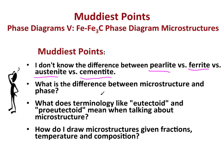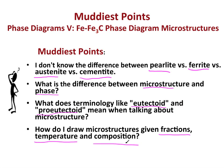What is the difference between microstructure and phase? What does terminology like eutectoid and pro-eutectoid mean when talking about microstructure? How do I draw microstructures given fraction, temperature, and composition? In this screencast, I will be using the calculations from the last screencast to explain microstructure. So if you haven't seen that video, you probably should — there's a link for it up in this corner over here.